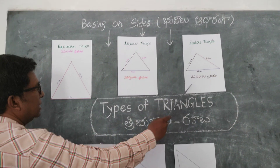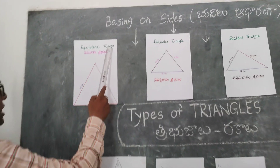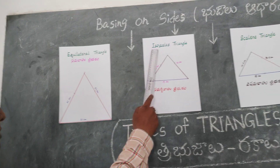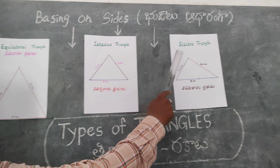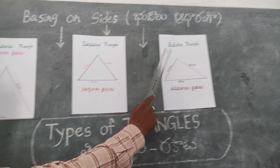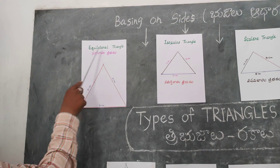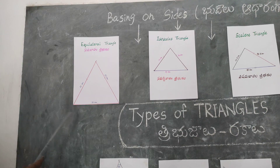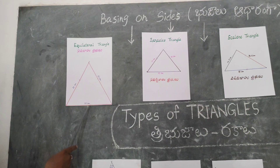Triangles are three types. Equilateral triangle. Isosceles triangle. Scalene triangle. In equilateral triangle, all sides are equal.